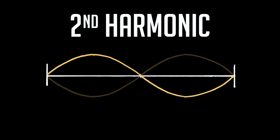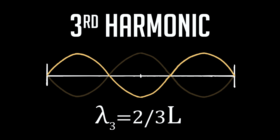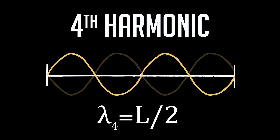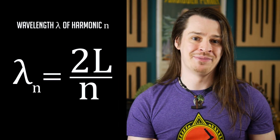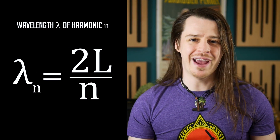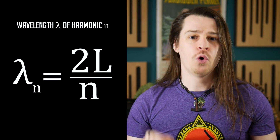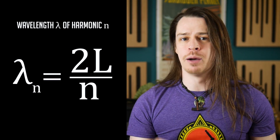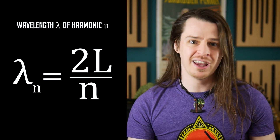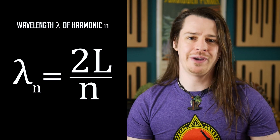The second harmonic has wavelength L, and so on. The wavelength of each harmonic can be calculated using the equation lambda equals 2L upon n, where n is the number of the harmonic we wish to calculate.